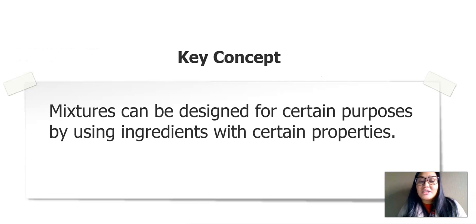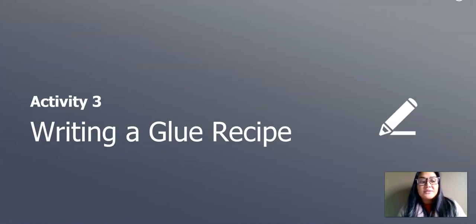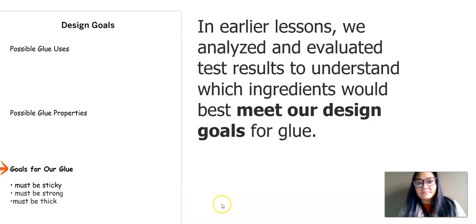Here's another key concept: mixtures can be designed for certain purposes by using ingredients with certain properties. We're coming to a third activity in our lesson — writing a glue recipe. In earlier lessons, we analyzed and evaluated test results to understand which ingredients would best meet our design goals for glue.